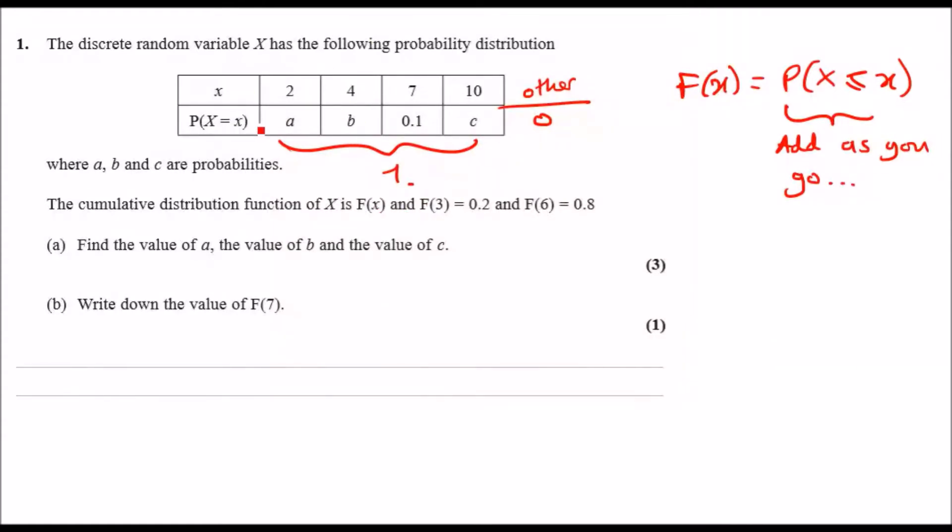If it's somewhere in between like 3, remember that 3 here would fall on this other which is zero, so the only value you would have is up to 2 and 3, which means a plus zero, so just a, and so on. Okay, so we know that F(3) here is 0.2 and F(6) is 0.8.